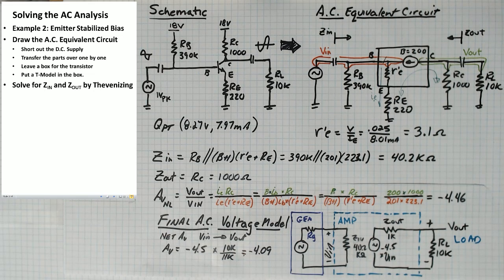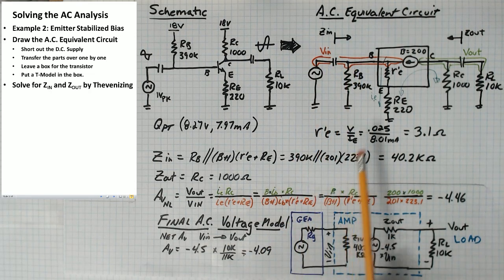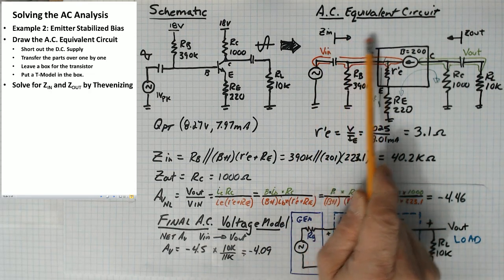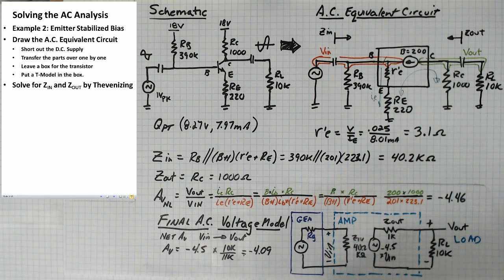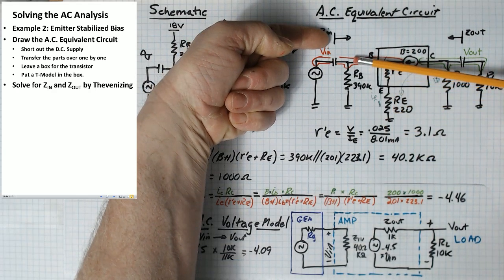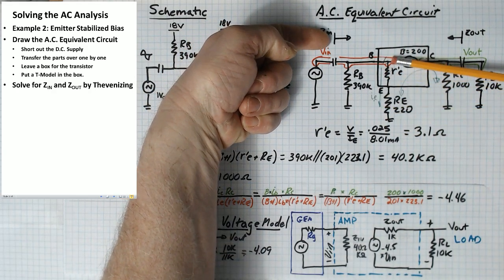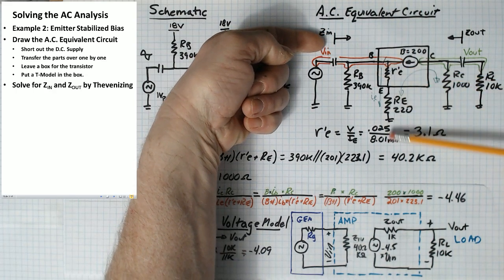Now that we've got the AC equivalent circuit, we can analyze this. And we can use it to solve for Z in and Z out by thevenizing. So for Z in, we stand at this point and we look into the circuit and reduce all of the impedances on the input of that circuit down to a single impedance through thevenizing.